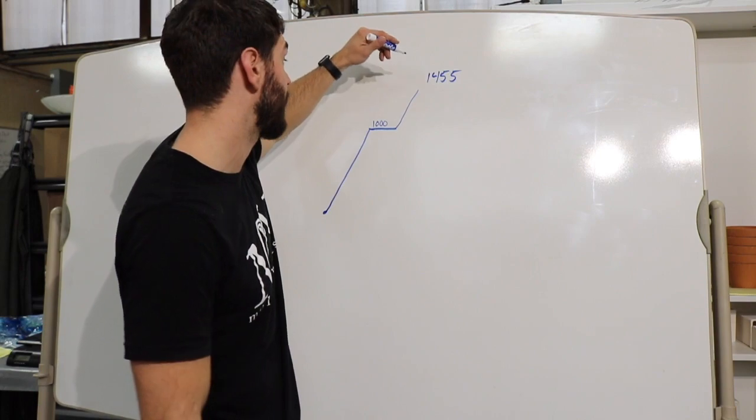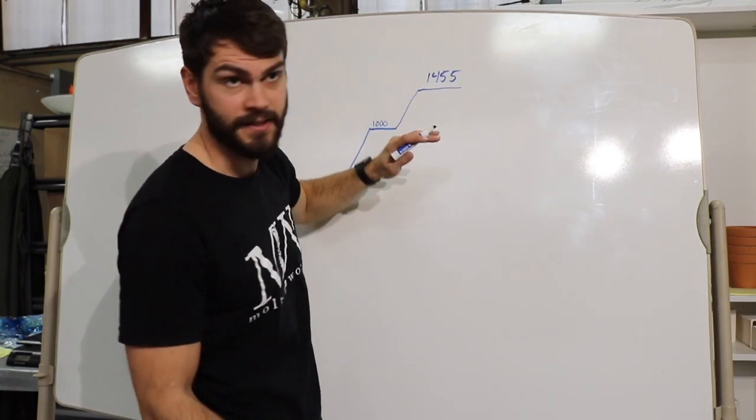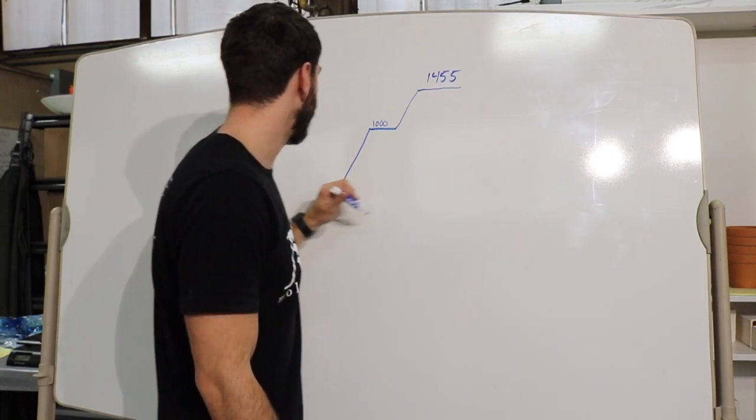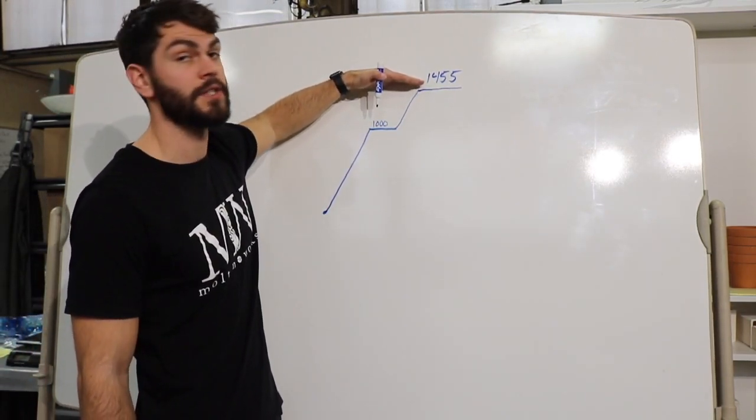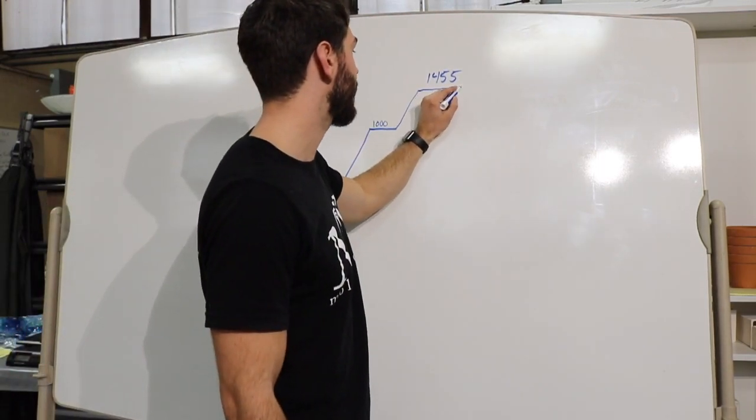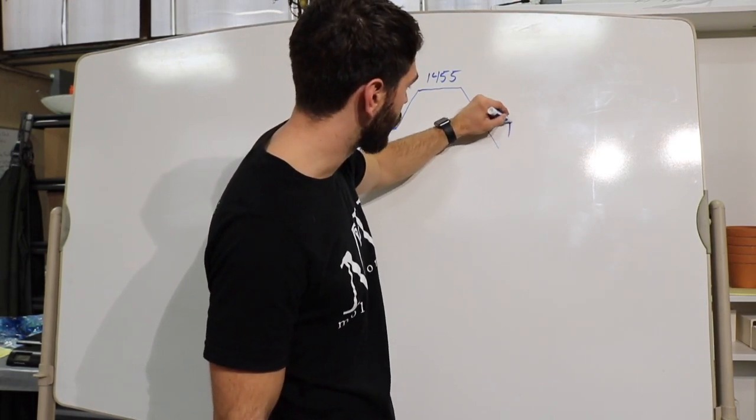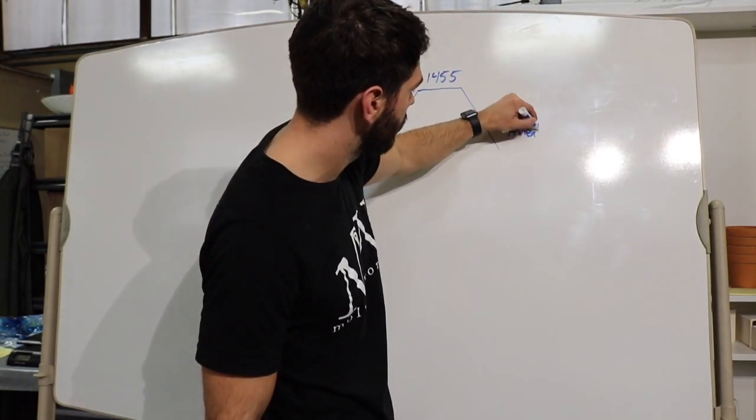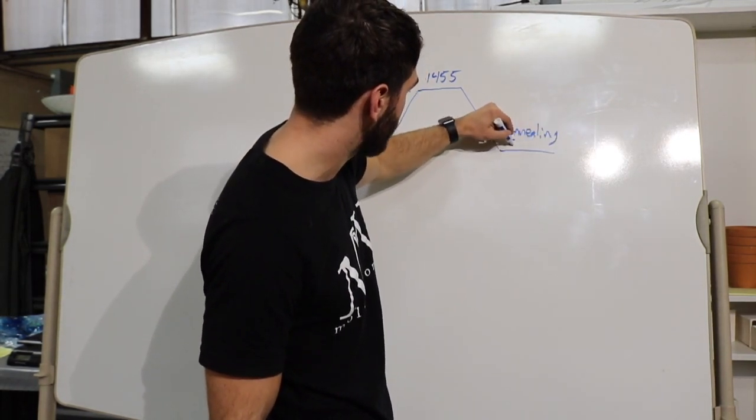At least that's what system 96 that I use I fire it at. Okay, we'll get to the time as well in a minute, but ramp up to that thousand, then you're ramping to your top temperature. Then you're gonna come back down and you're gonna hit a point that's called the annealing point.